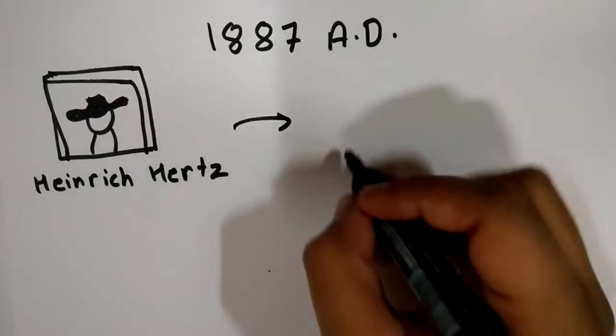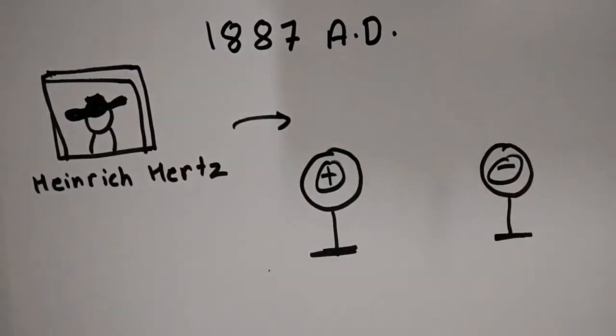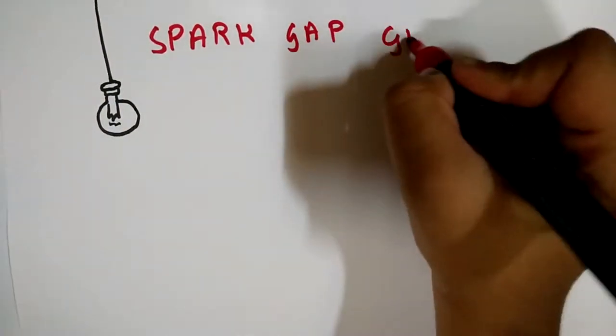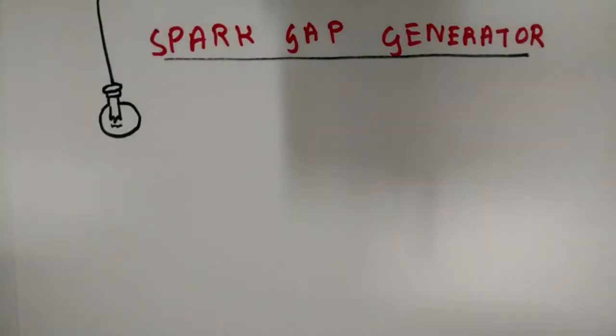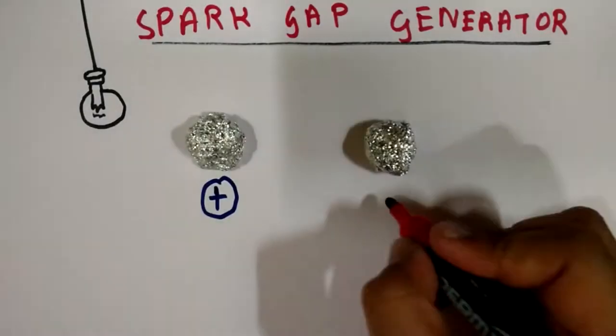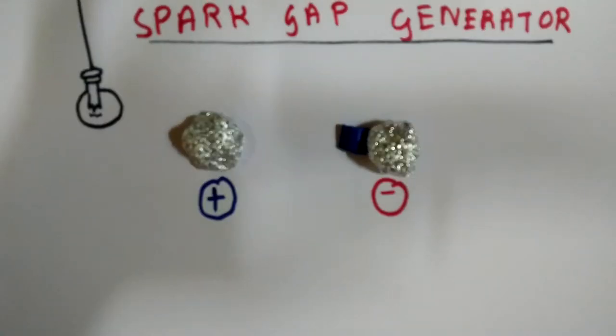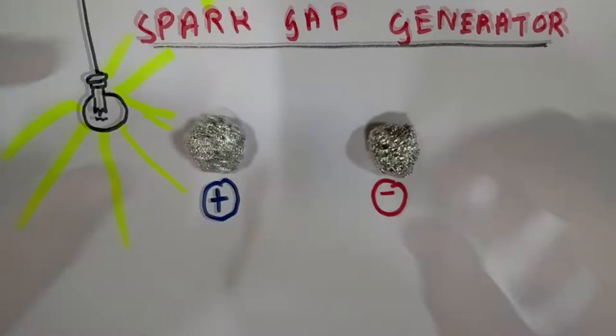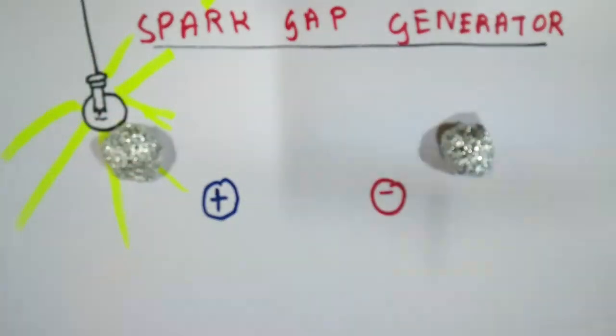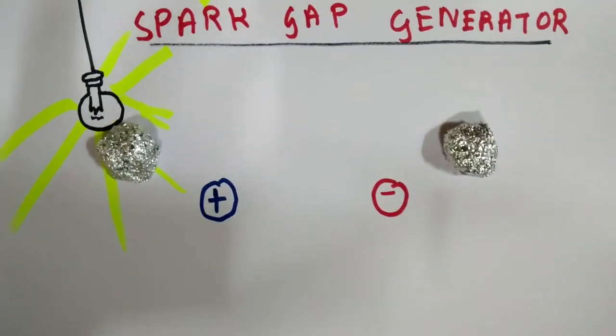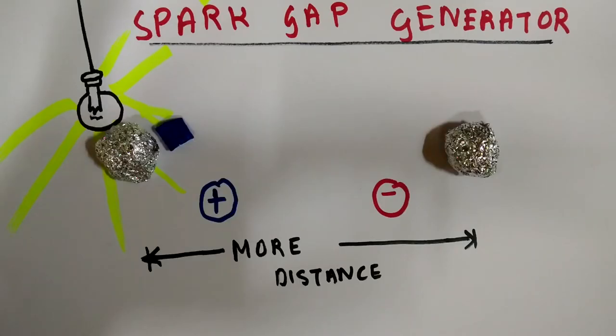The photoelectric effect was first observed by Heinrich Hertz in 1887 while he was working on the spark gap generator. In a spark gap generator there are two metal spheres and an electric spark travels from one metal sphere to the other. Hertz observed that when the sphere of the spark gap generator was illuminated with visible or UV light, the sensitivity of the spark gap generator increased.